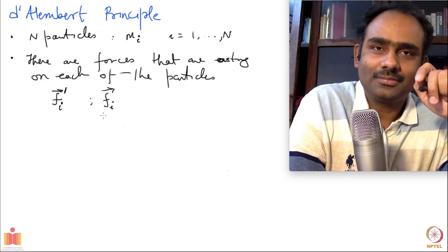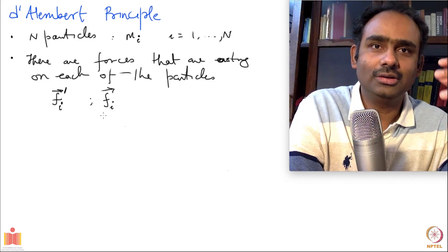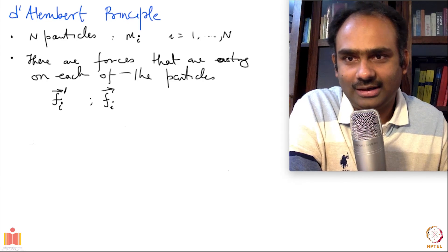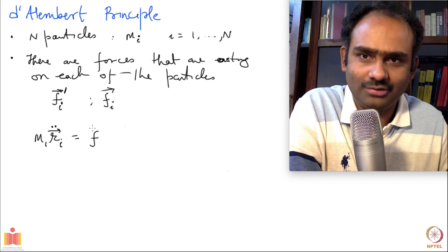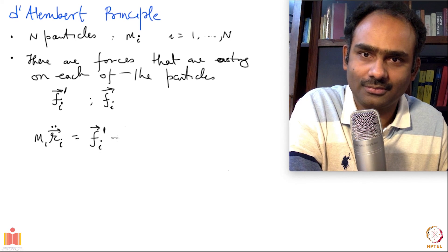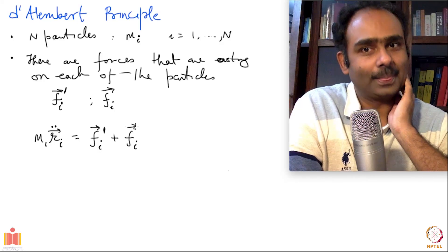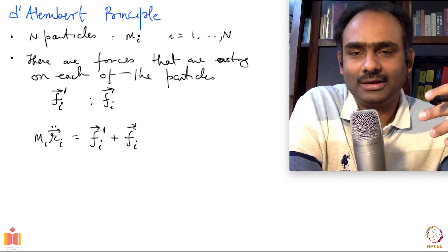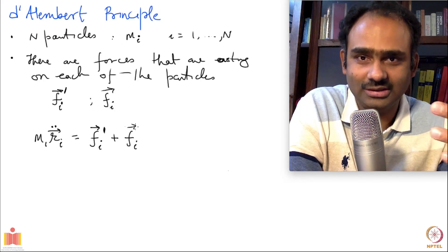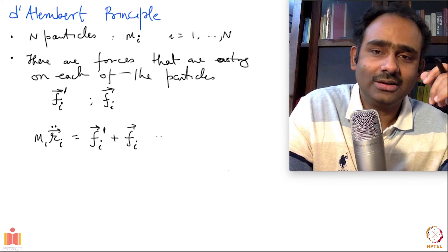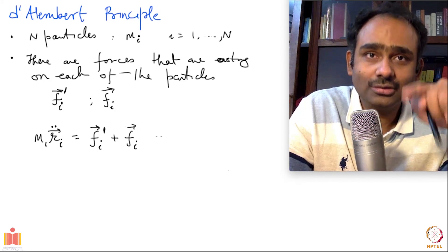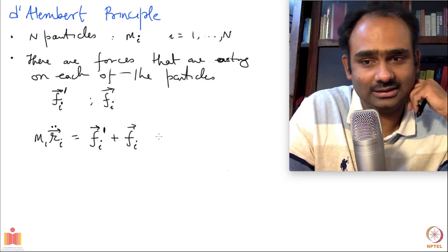Each particle evolves in time according to Newton's second law: mᵢr̈ᵢ = fᵢ' + fᵢ. However, we are not happy with this equation. Though it is true, it is not very useful because on the right-hand side you have fᵢ' — you need to know the constraint force in order to solve for the trajectory of the particle, and you may not necessarily know what those constraint forces are.